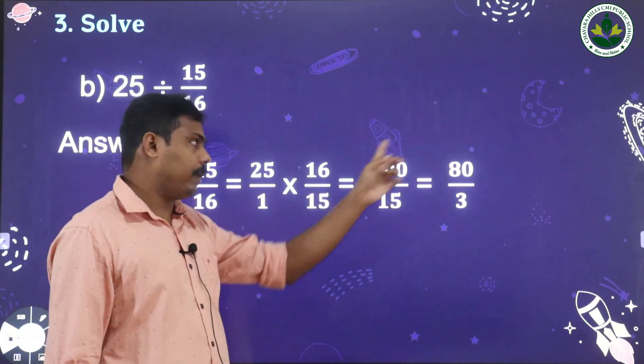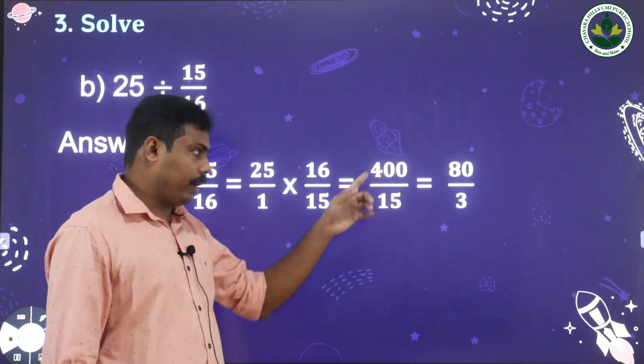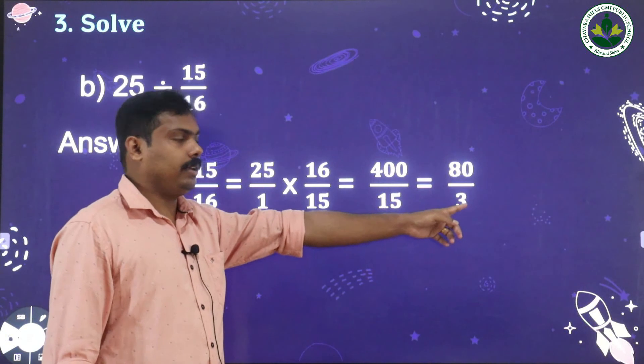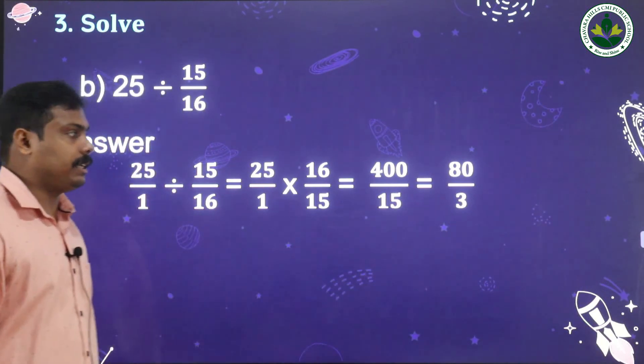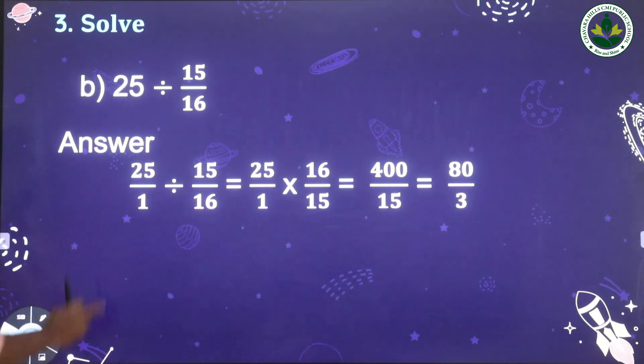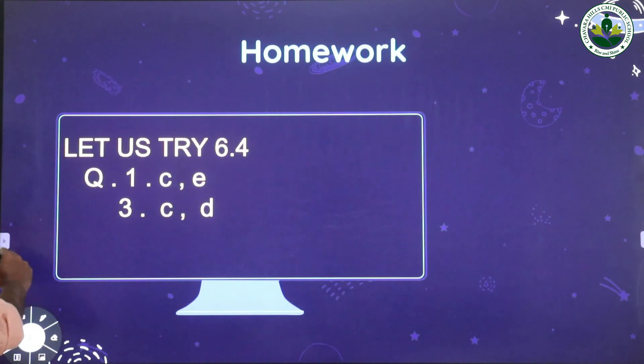After cancellation we get 80/3. So the answer is 80 divided by 3.